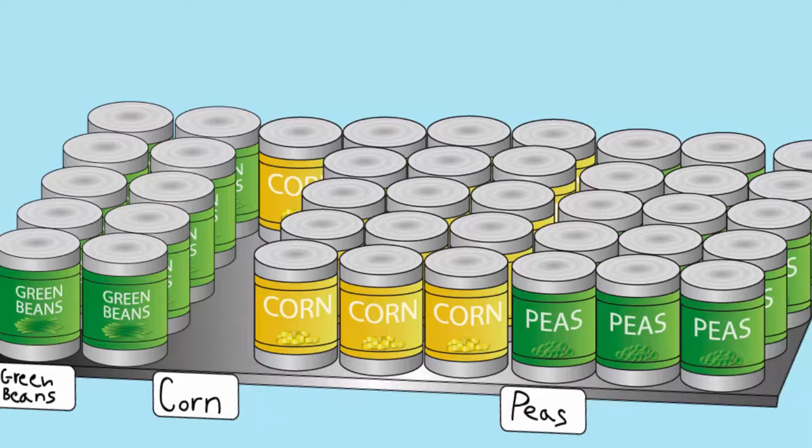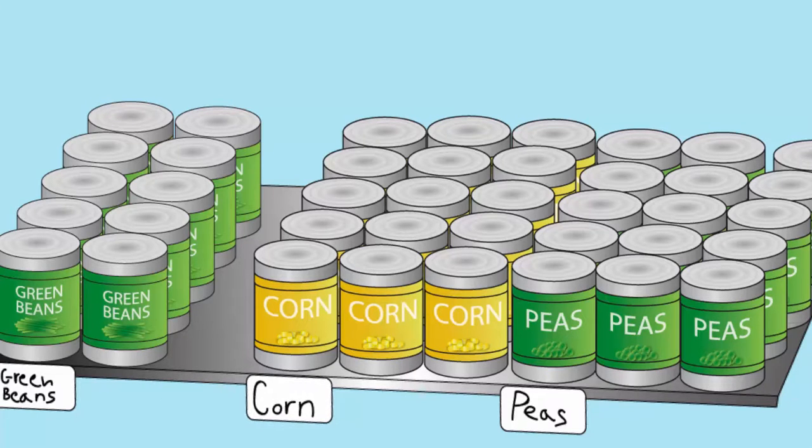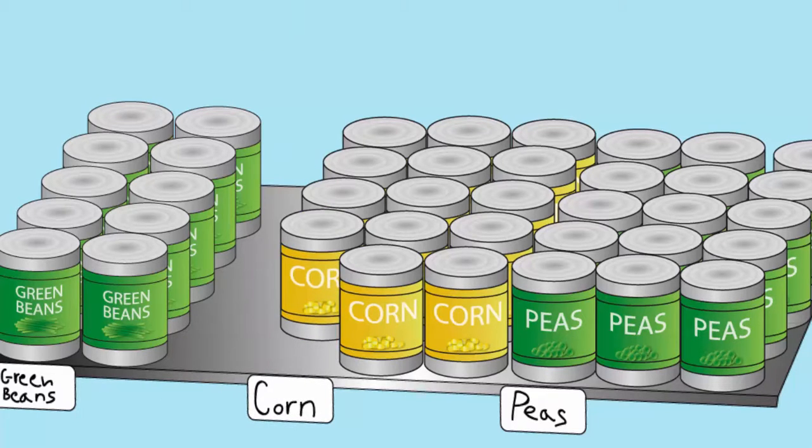Instead, we'll continue to eat from that column. But now that the column is empty, we can move the tag to the right. Now we've marked a new active column, and we'll start to eat from that column instead.